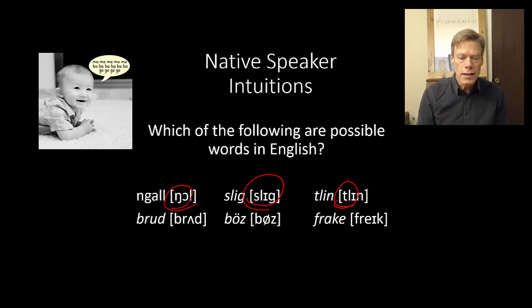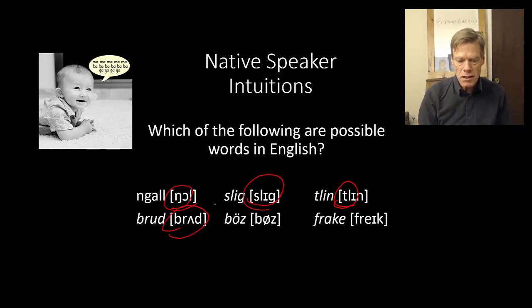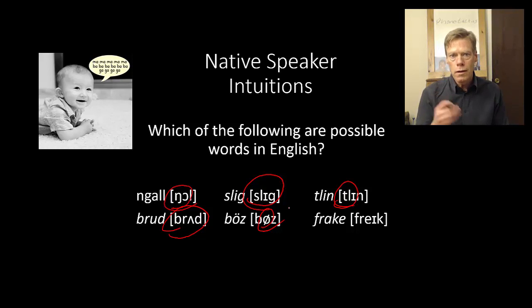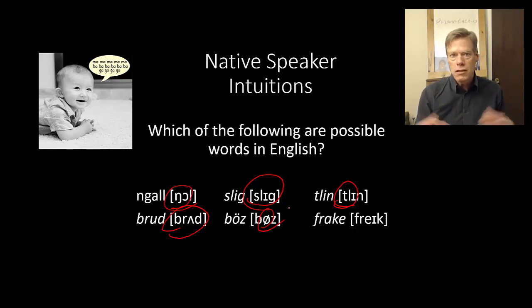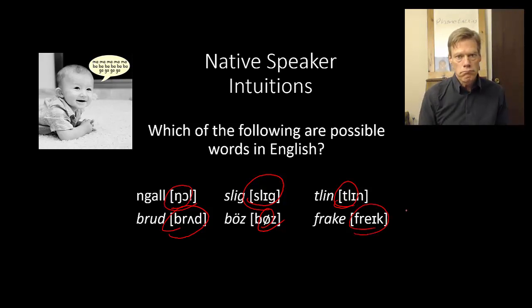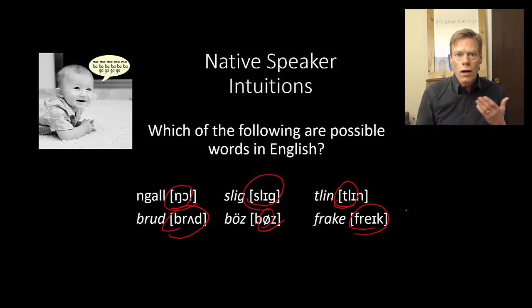A word like brud, though, is problematic just because of that vowel sound, which is a front rounded vowel. And in English, we just don't have front rounded vowels, so again it's just not part of our sound system. But break — good. So we see that this is part of our intuitions, part of our mental grammar: we know what sound sequences are possible and what aren't. And that is the phonotactics.